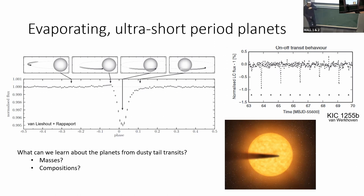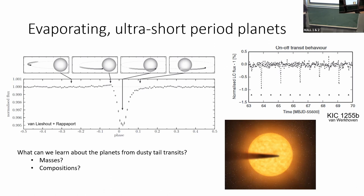Looking at the depth of this and things like that, you can try to work out how much mass this thing is losing. If you assume most of the tail is optically thin, you can say from the transit depth how much dust is between you and the star. You work out that it's about a tenth of an Earth mass every gigayear, or an Earth mass in the age of the universe. So these planets are evaporating enough that they'll disappear completely in the lifetime of the universe, and that's a hard lower limit.